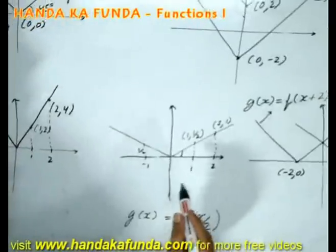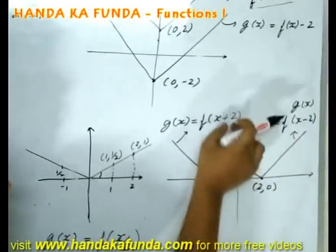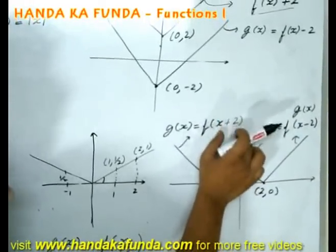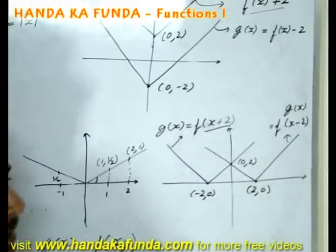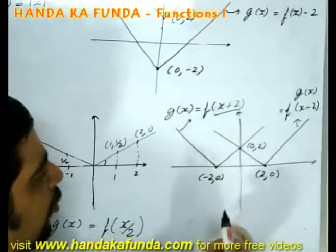However, another change which can take place: instead of adding plus 2 or minus 2 to the overall value, I make it f of x plus 2, where the x plus 2 is inside. That will make my entire graph shift.